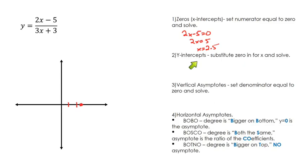Then to find the y-intercept, we substitute zero in for x. I want to tie this back to Algebra 1. For the zeros, we're trying to find out what's the x value when y is zero, which was 2.5. For the y-intercept, we're trying to figure out what is the y value when x is zero. So I substitute a zero in for x.